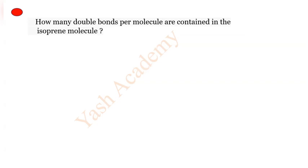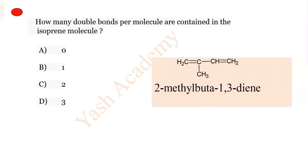Question 25 (last question): How many double bonds per molecule are contained in the isoprene molecule? Options: A) 0, B) 1, C) 2, D) 3. The correct answer is C) 2. Thanks for watching this video.